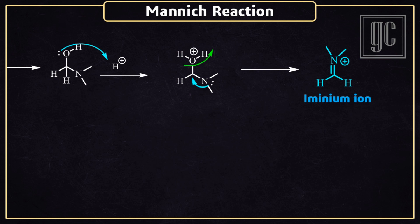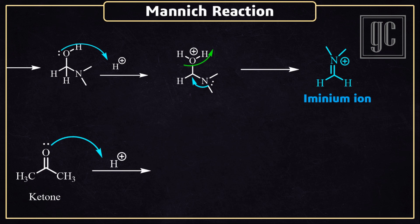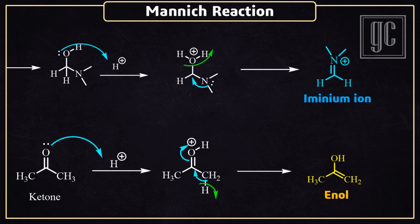The second step is the synthesis of enols. The carbonyl molecule, in the presence of acidic conditions, gets protonated and a positive charge on oxygen is generated. To neutralize the positive charge on oxygen, one alpha-hydrogen leaves the molecule, and its bonding electrons move to the carbonyl carbon. Because of that, the enols are formed as the final product.